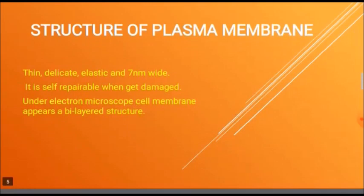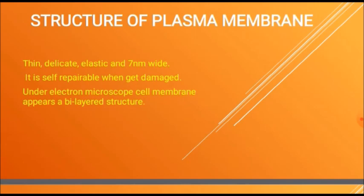Structure of plasma membrane: as we know, the plasma membrane is a thin, delicate, elastic and 7 nanometer wide structure which is self-repairable when it gets damaged. Under the electron microscope, cell membrane appears as a bilayet structure.